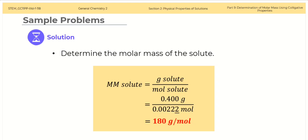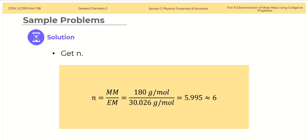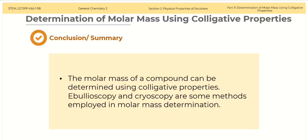At this point, we now have the mass and the amount in moles of the unknown solute. We can now determine the molar mass of the solute. Dividing the mass by the amount in moles gives us 180 grams per mole. We will use this value to determine the molecular formula. Get the multiplier N by dividing the molar mass by the empirical mass, which gives us a multiplier approximately equal to 6.